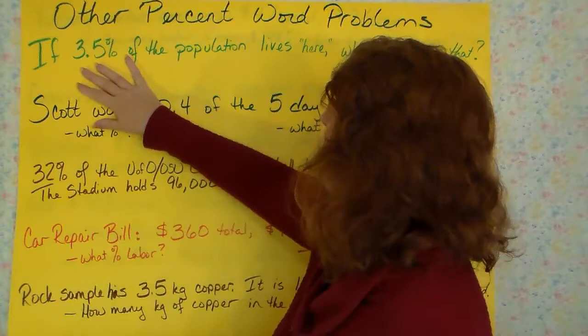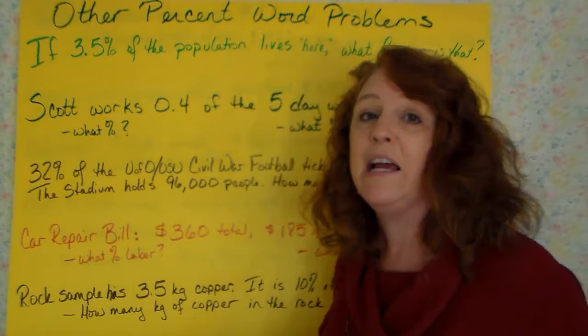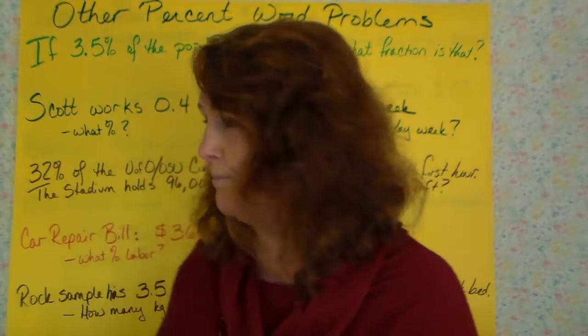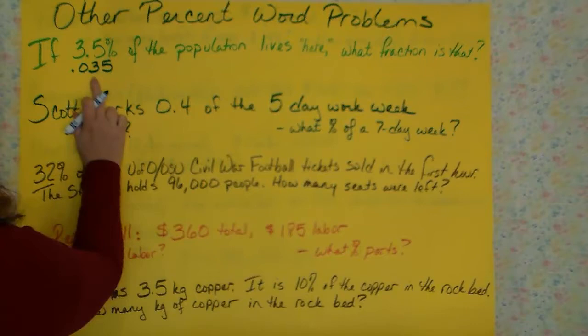One of the questions asks, if 3.5% of the population does something, is this kind of person, lives here, it doesn't matter. If 3.5% of the population does this, what fraction is that? I need you here to be able to convert between decimals and fractions easily.